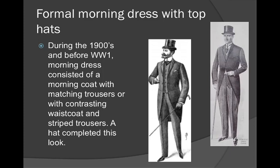Men had formal morning dress that had top hats, and before World War I the morning dress had a morning coat with tails. This coat went down to around just above the knee, and they had matching trousers with a contrasting waistcoat and striped trousers. So they either had a coat that contrasted with stripes or they matched, and a top hat would complete the look.